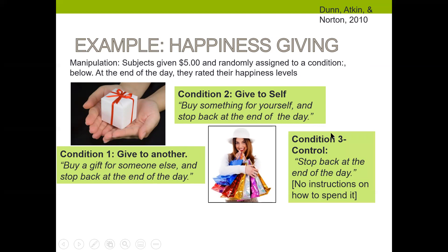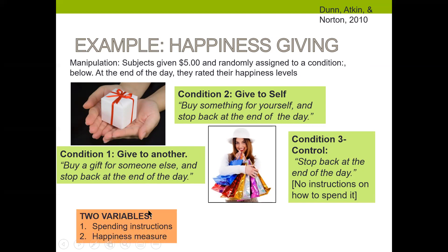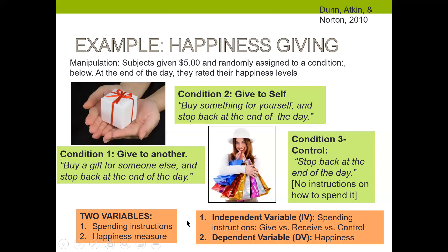In condition three, they weren't given any instruction — they were just told to stop back at the end of the day. So what are the independent and dependent variables? The two variables were spending instructions (give to another, give to self, or control) and the happiness measure. The independent variable was the spending instructions — give versus receive versus control — which was the manipulation. The dependent variable was happiness.